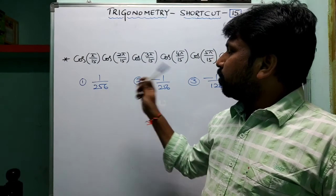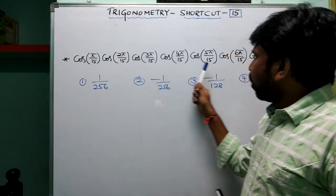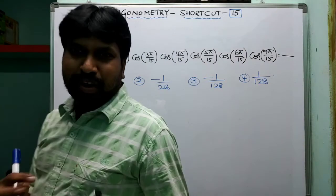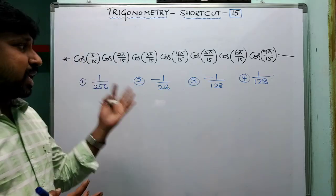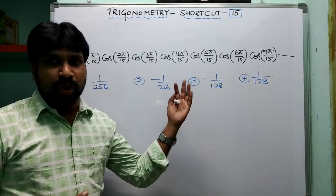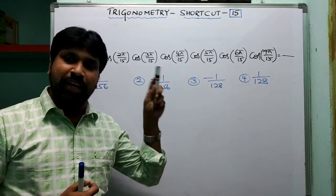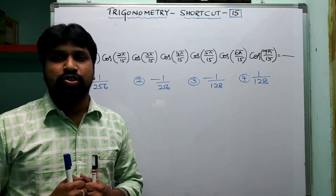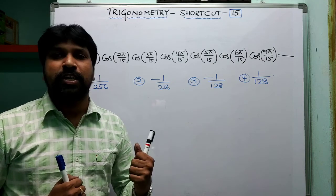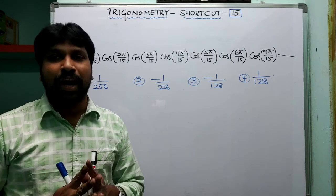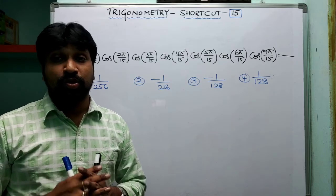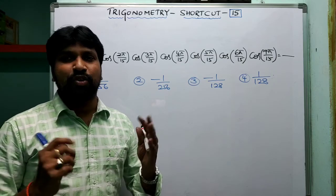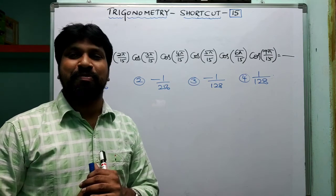Now your question: cos(π/15) · cos(2π/15) · cos(3π/15) · ... · cos(7π/15). Is the formula applicable or not? If applicable, what is the answer? If not, how do you solve it? Work it out and post your answer in the comment box. That's all for today's class. I hope you enjoyed the shortcut. Please subscribe to my channel to get daily updates. Thank you very much, friends — bye!